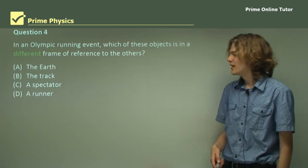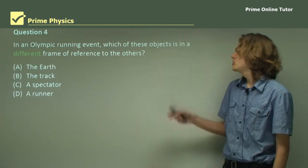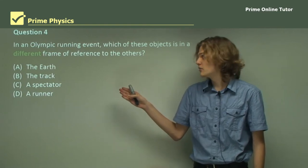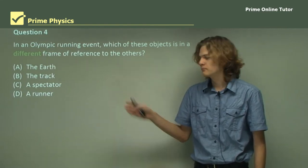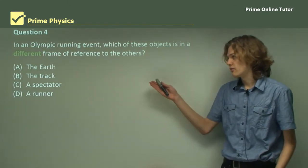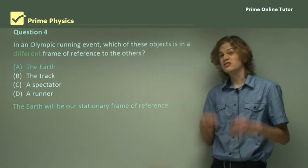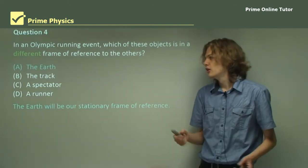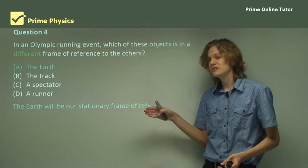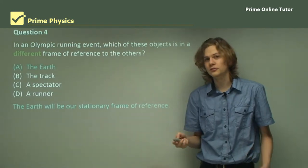Question 4. In an Olympic running event, which of these objects is in a different frame of reference to all of the others? We'll start with A, the Earth. The Earth will be our stationary frame of reference. So if everything else is moving and the Earth isn't, then the Earth will be the one that's in a different frame of reference.